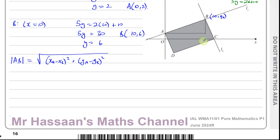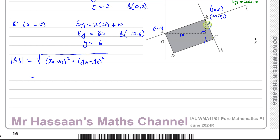The horizontal distance xB minus xA is 10 units. The vertical distance between A and B: A is (0, 2) and B is (10, 6), so vertically that's 6 minus 2, which is 4. Using Pythagoras, the formula automatically squares each component distance and takes the square root of their sum to give length AB.